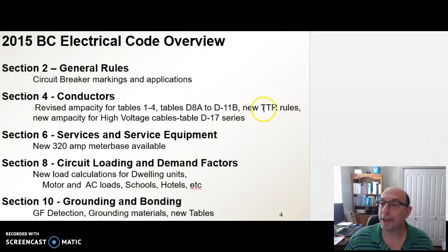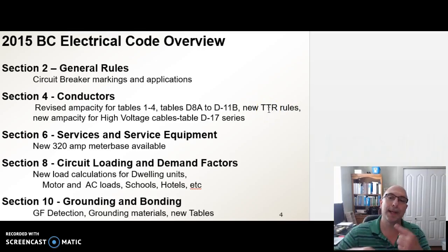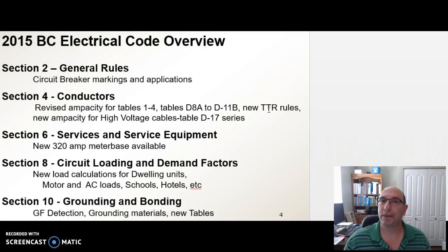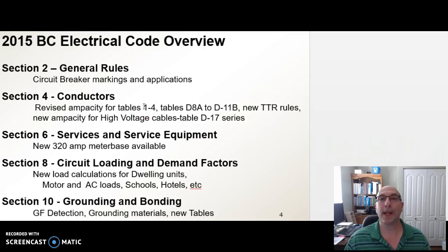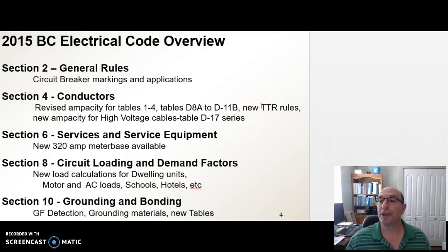There's a big change for the temperature terminating rating rule, which came out in the last edition. We've now harmonized with the Americans — we've gone a little backward, but we've harmonized. If you have a piece of electrical equipment rated for less than 100 amps, you must default to the ampacities of Tables 1 through 4 in the 60-degree ampacity column. And if it's above 100 amps, then you can use the 75-degree rating ampacity column.